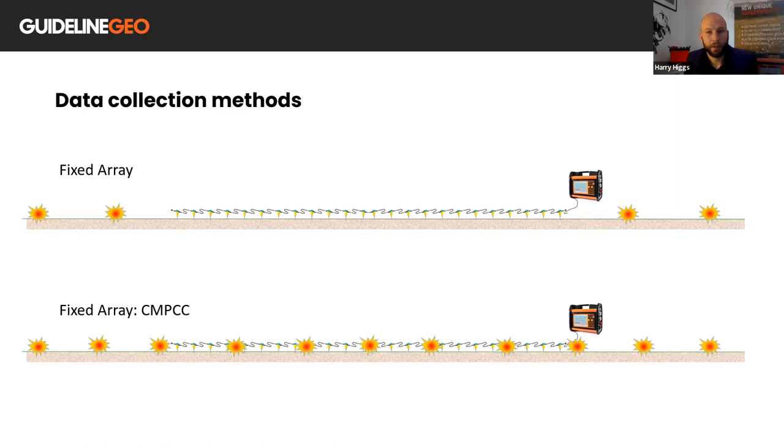Another type of fixed array would be to have many shot positions located throughout the array and then by processing the data using the common midpoint cross correlation method it's then possible to derive multiple one-dimensional models and interpolate the results into a two-dimensional profile. This is a popular approach due to the benefits of the CMPCC method such as lateral resolution however care must be taken during the data processing not to bias the result with near or far field effects.